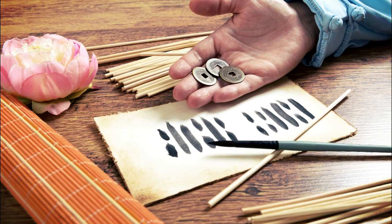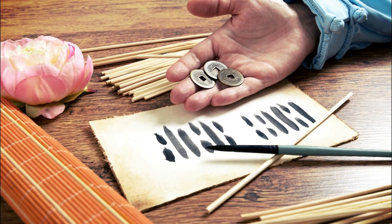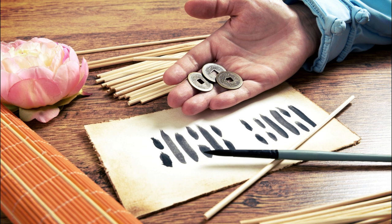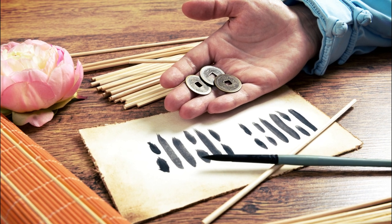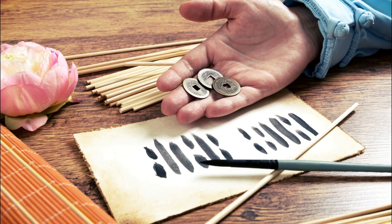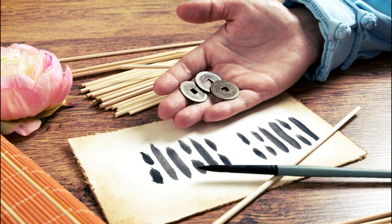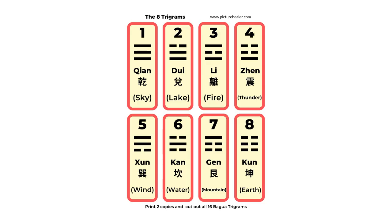The most popular way to do a Yi Jing fortune telling is to use coins, and there are many different other ways. I'm going to introduce you one simple way today, and I also have a free PDF download. You can print it out and cut up the Ba Gua symbols to use as a divination tool. Check out the download link in the description box below.